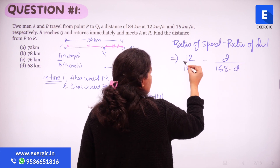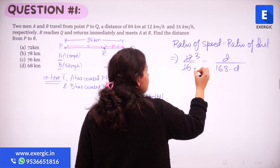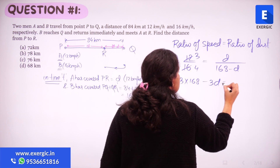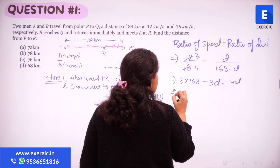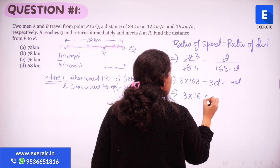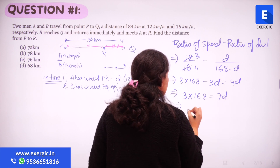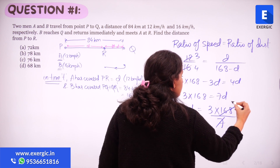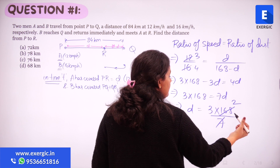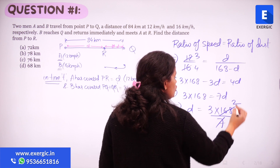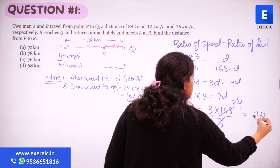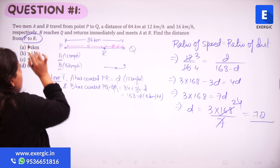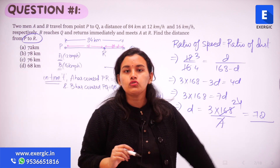Simplifying 12:16 gives 3:4, so we get 3 × (168 − D) = 4D, which gives 504 − 3D = 4D, so 3 × 168 = 7D. Therefore D = (3 × 168) / 7 = 72 kilometers. The distance between P and R is 72 kilometers.